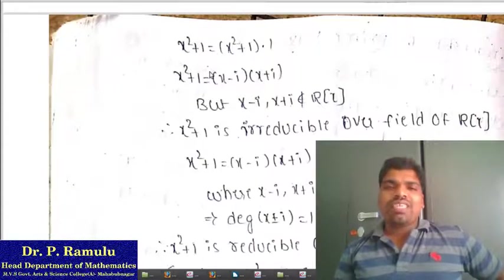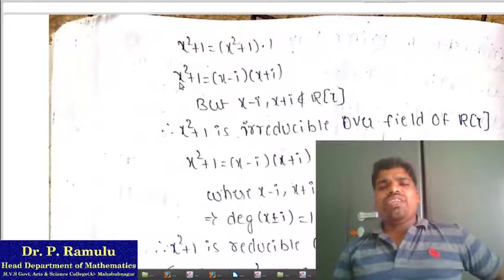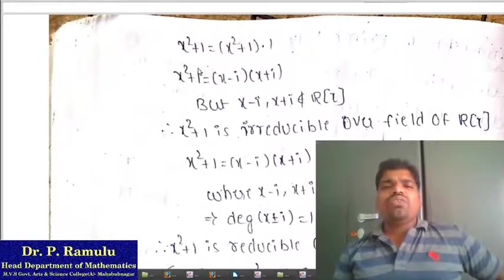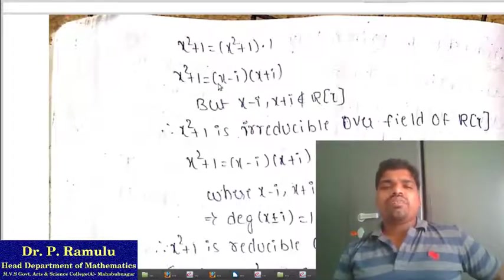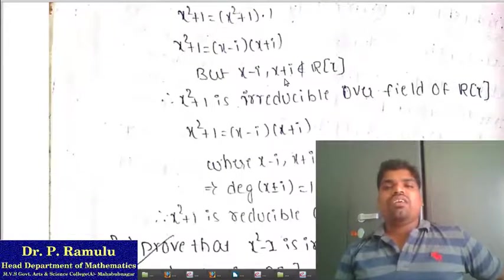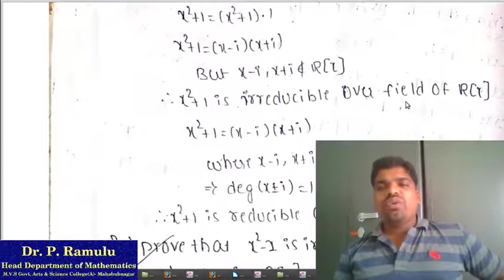If I write x² + 1, it can be factored as (x − i)(x + i). But if I substitute any real number, it cannot get zeros. Because only when x = i do we get zeros. That means it can be written as (x − i)(x + i), but x − i and x + i do not belong to R[x]. Therefore x² + 1 is irreducible over the field R[x].